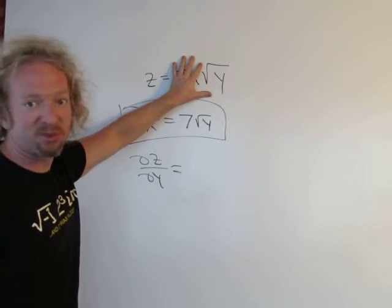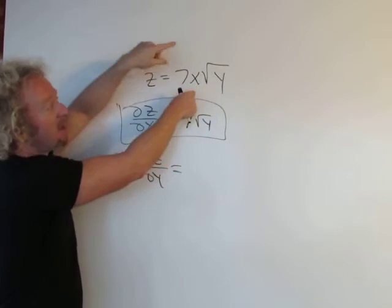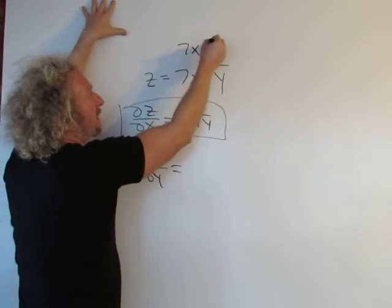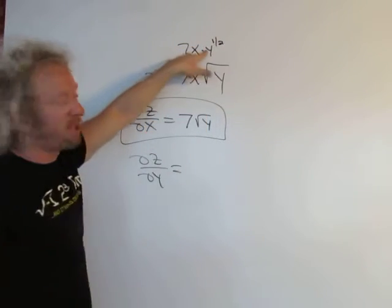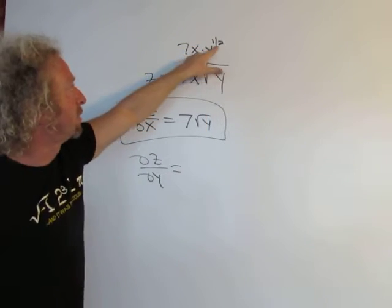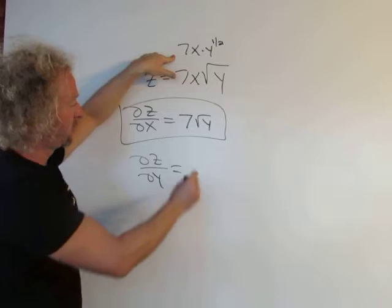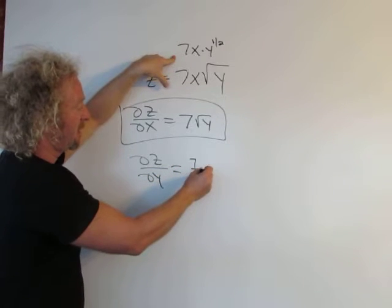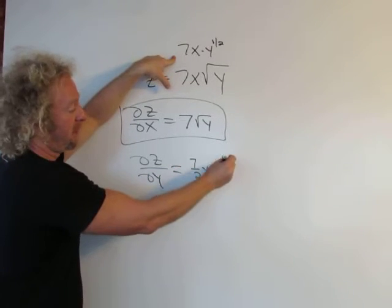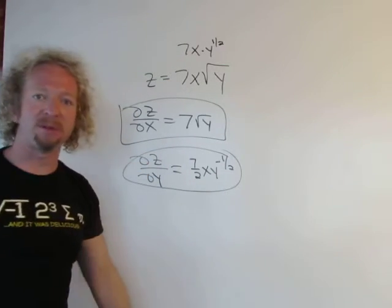So now we're taking this derivative here, we're taking the derivative of this and this is hanging out. So you want to think of it like that because we have to differentiate the y here. Then you bring the one-half down using the power rule. So you would get 7 halves x, y to the negative one-half. And that would be it. I hope that made sense.